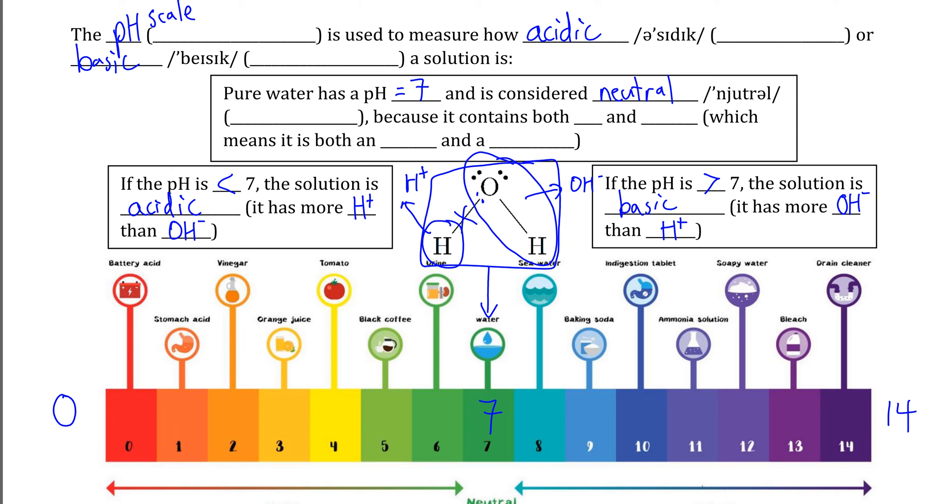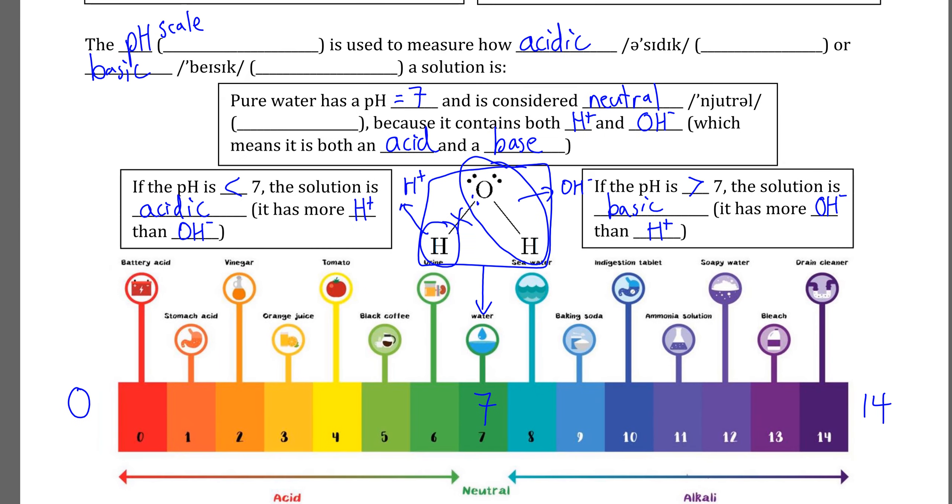The reason why we define water as neutral is not because it acts as neither an acid or a base, but because it has both H+ and OH- in its structure. That technically means that water is both an acid and a base at the same time, which is why water is so special among acids and bases.